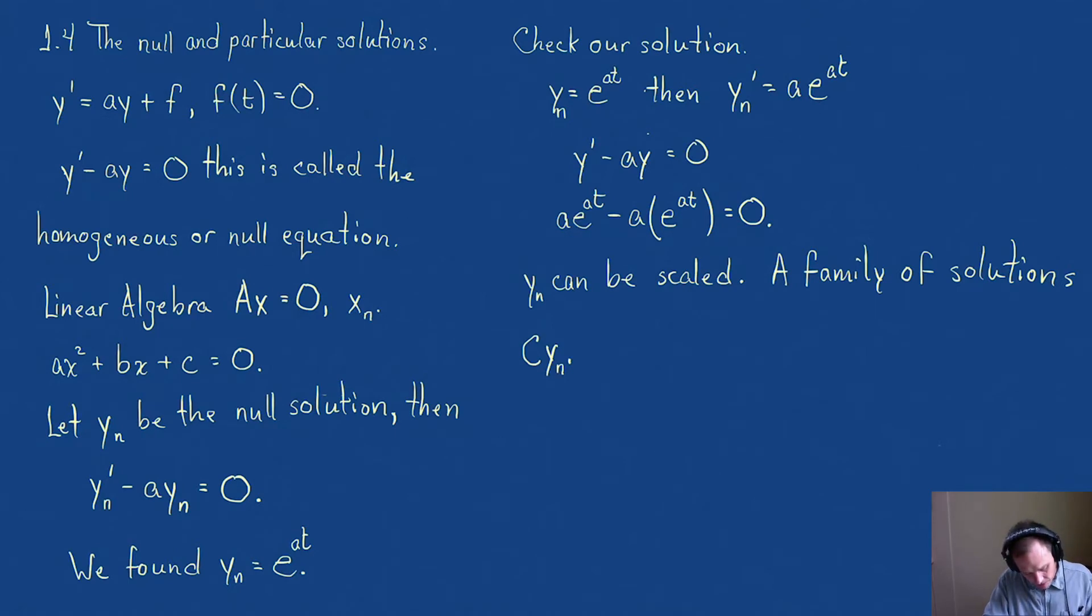I'm going to call this solution y_s. If I take the derivative of y_s, that's going to be C times y_n'. So now what we want to do is substitute these values into the original equation: y' - ay = 0. We have Cy_n' - aCy_n. If I factor out a C, I have C times (y_n' - ay_n).